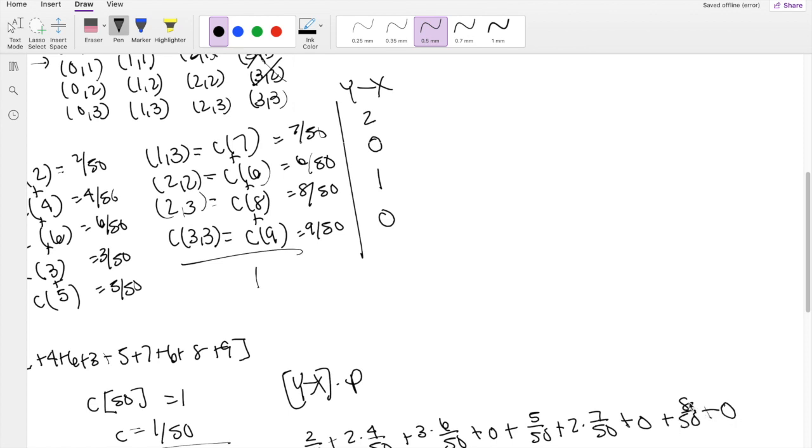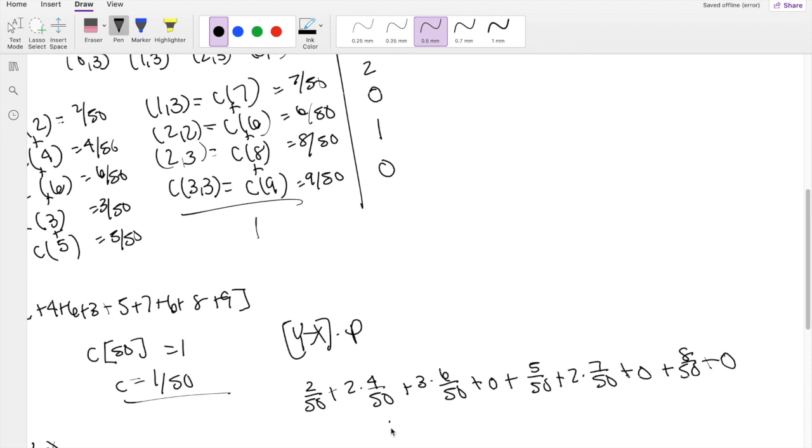8 over 50 here. And the last one is also 0. So when we add that up, I can factor out the 50 again, and then just add up 2 plus 8 plus 18 plus 5 plus 14 plus 8. That's going to be equal to 55 over 50, which is equal to 1.1, which is our answer E.